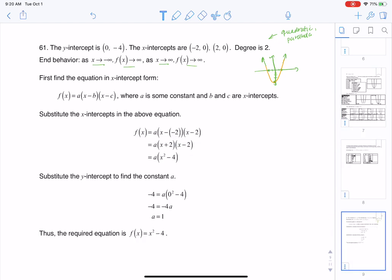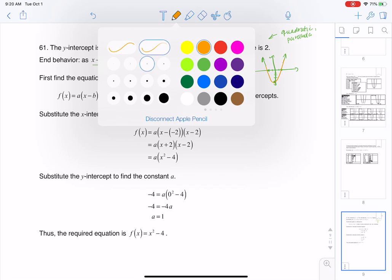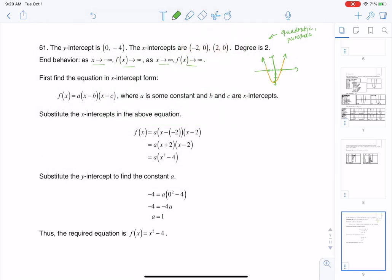All right, so anytime I have a quadratic, let me change this back. I'm having all sorts of fun here. Anytime I have a quadratic equation, and I say quadratic because the degree is 2, I'm going to have two x-intercepts, and I have that constant out there, that stretch factor, and we usually call that A, right?